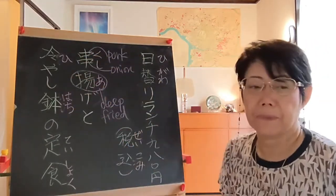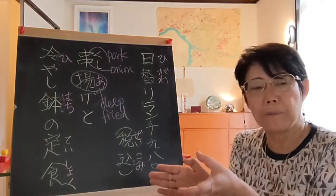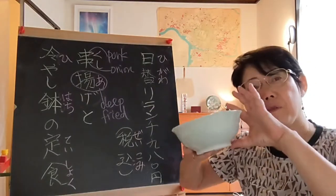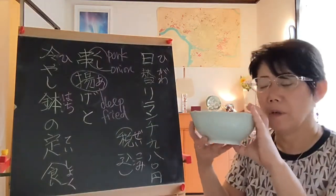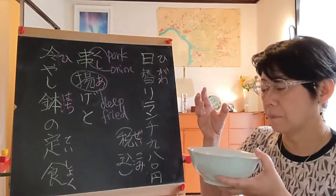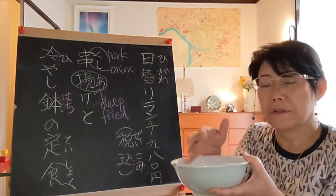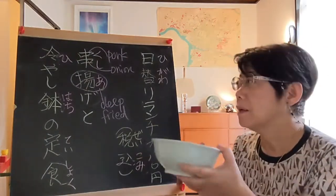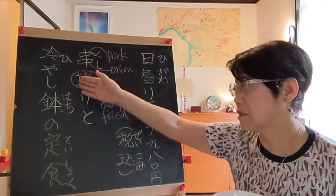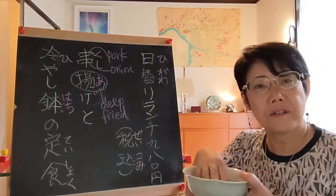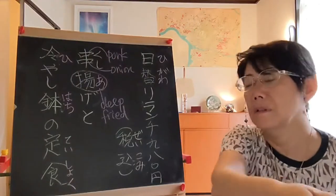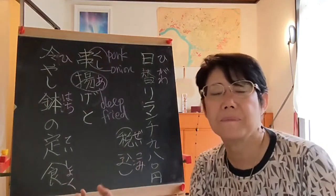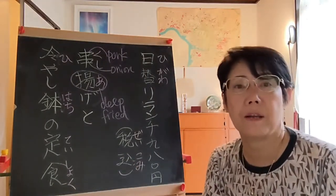Hiyashi-hachi: hiyasu means to cool down, and hachi is a little deep dish or container. So hiyashi-hachi might be tofu or vegetables placed in a dish and cooled in the fridge. We don't know exactly what's inside, so you can ask: hiyashi-hachi wa nan desu ka?